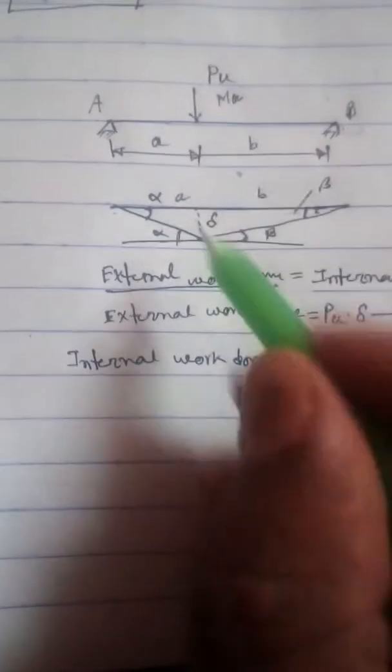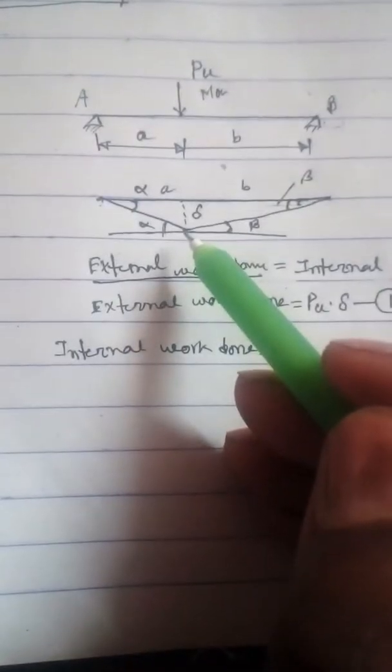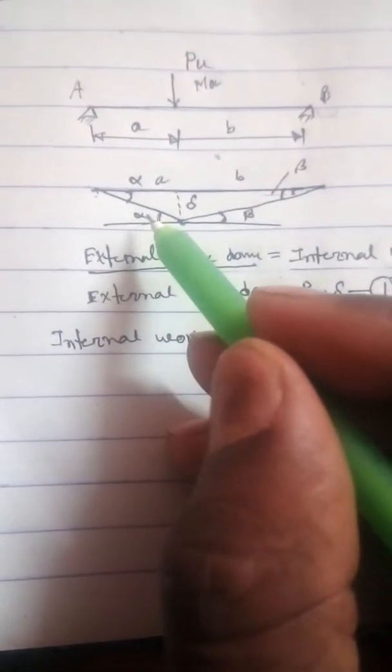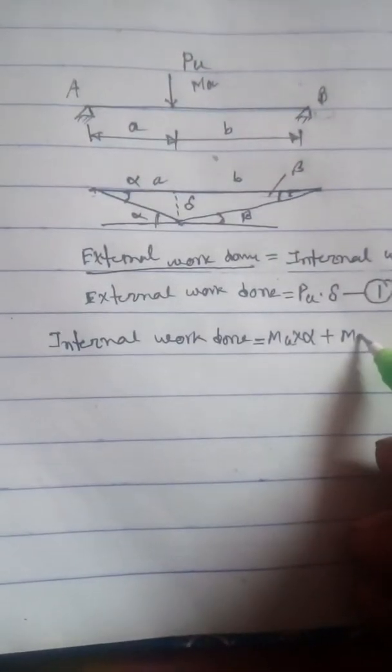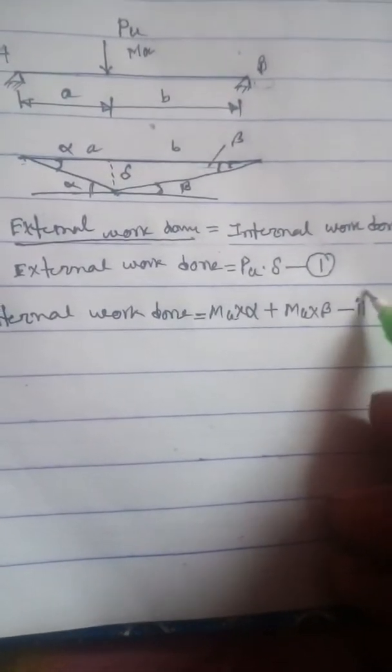For internal work done: the moment capacity of this beam is Mu, so plastic hinges will form at the load point. Internal work done will be Mu into alpha plus Mu into beta. This is equation number two.